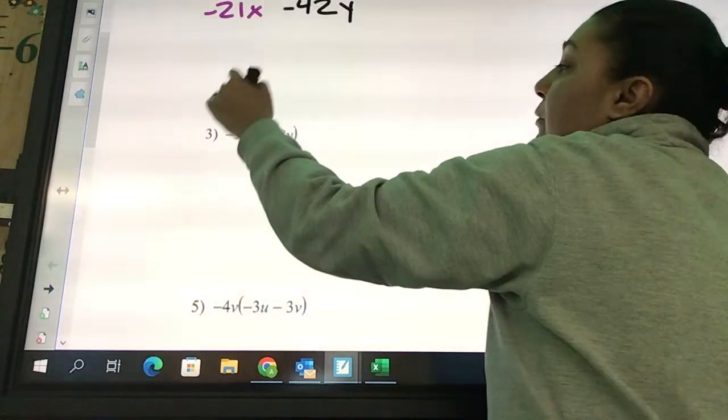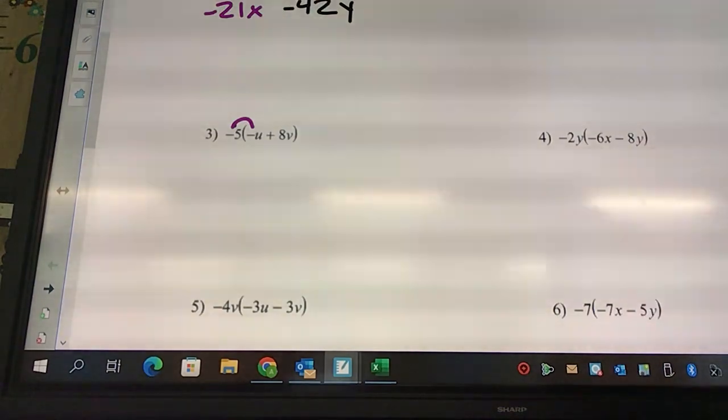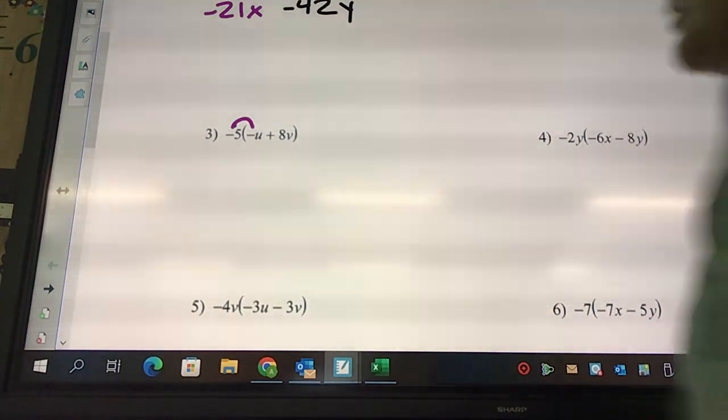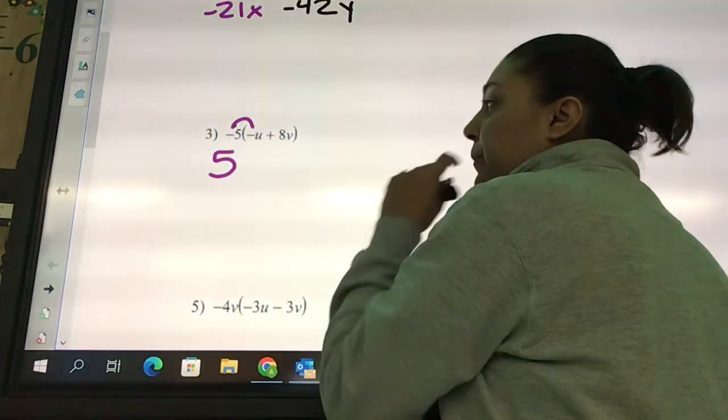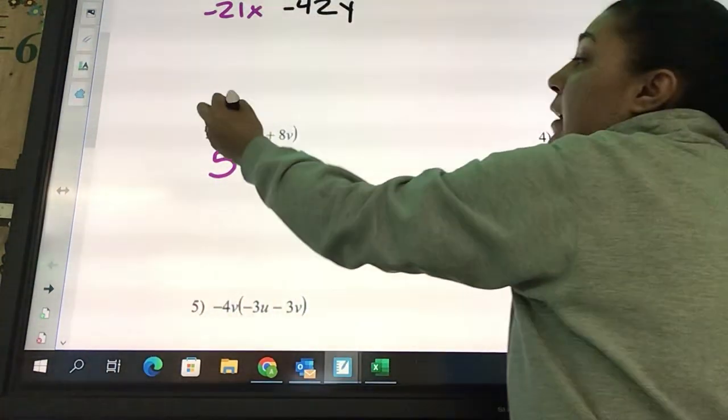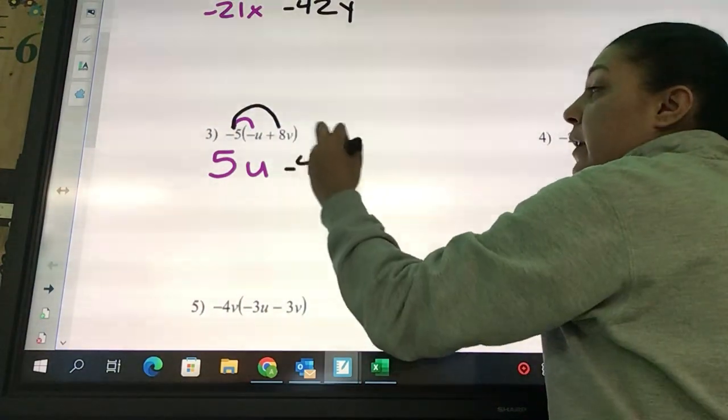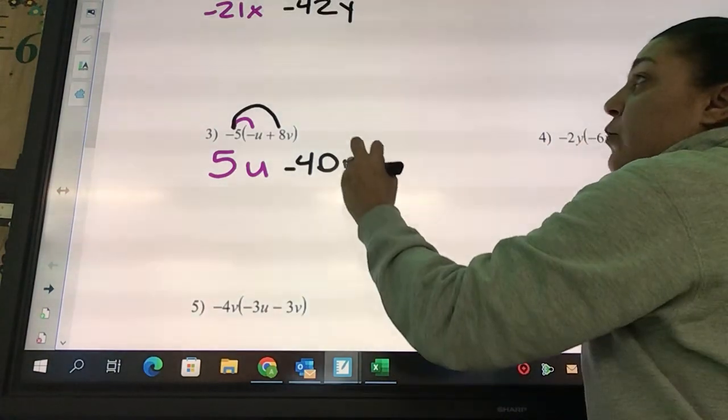I got five. Negative five times u - negative five times negative one is going to be five. How many y's are there? One. Negative five times eight is negative 40, and there's one v.